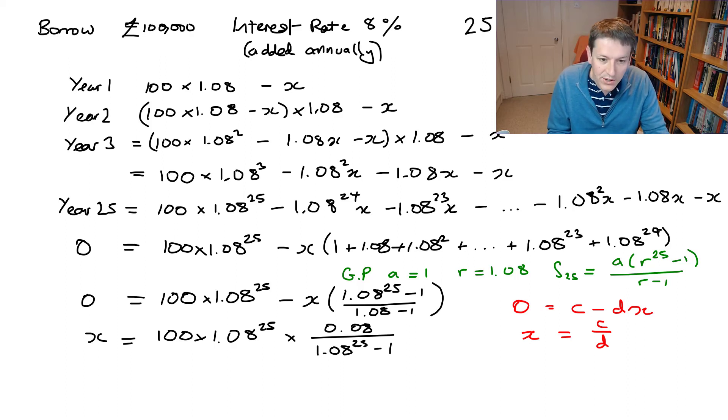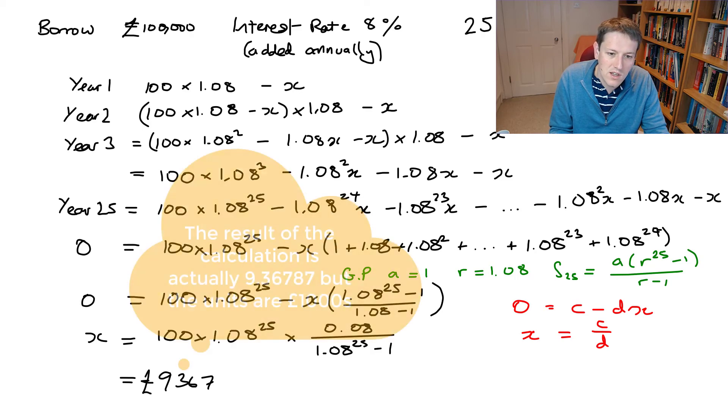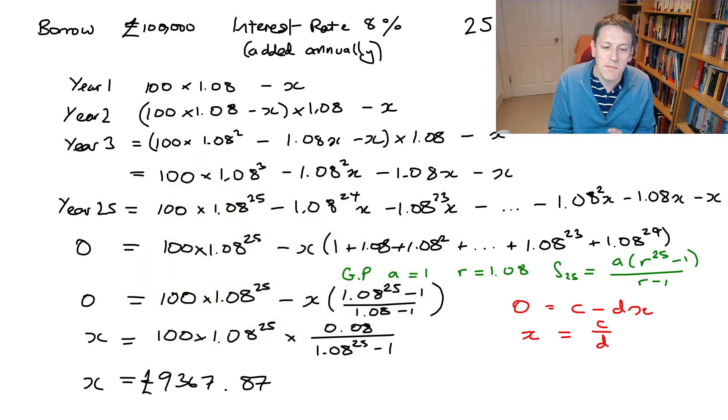And now we can just plug that into the calculator. And if you do, you find that you get £9,367 and 87 pence to the nearest pence, to the nearest 1p. So that would be the amount that we would have to pay off every year if we wanted to pay the same amount for 25 years and pay that off exactly.